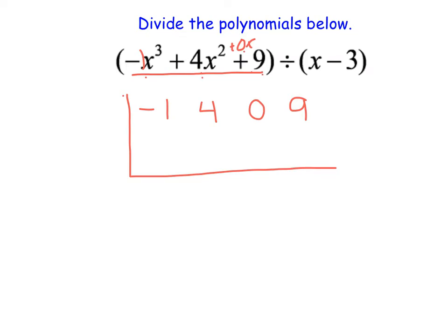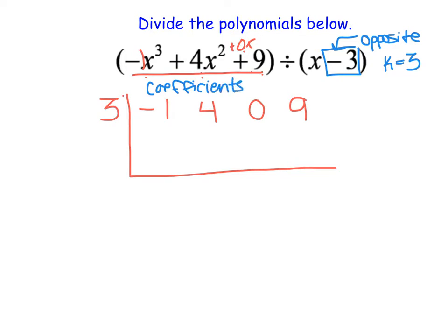Then from here, we find the value called our k value. The k value is the opposite of the constant that is inside with x. So if we have x minus 3, our k value becomes 3, and that value goes on the outside. Remember, these are our coefficients of the polynomial we are dividing, including the missing ones, and our k value is the opposite of what we are dividing by.